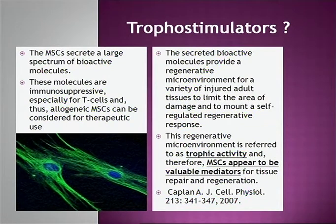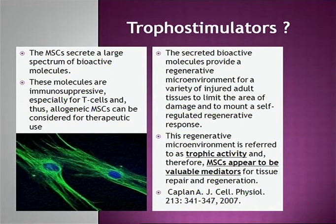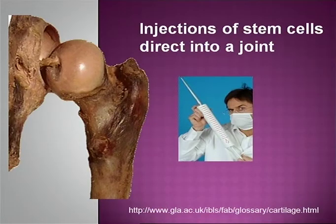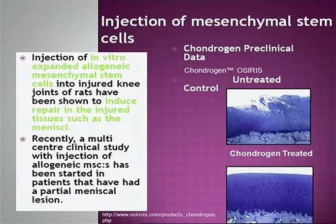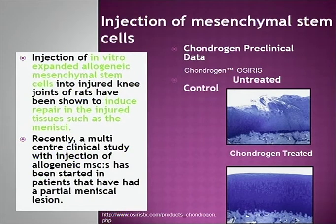There is another way to use stem cells: MSCs can be used as allogenic cells because they evoke very little immune response. The stem cells also secrete bioactive molecules effective for repair — called trophic activity. MSCs appear to be important mediators for tissue repair as trophostimulators. The next step is to inject them directly into the joint without any scaffold for osteoarthritic purposes, not to expect the stem cells to produce repair themselves, but to stimulate cells within the cartilage. Studies are ongoing showing how partially destroyed cartilage can be restituted with cell injection.